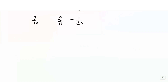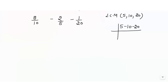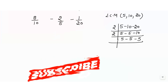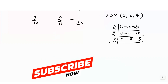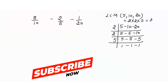Now suppose we have another subtraction question. We need to find the LCM of 5, 10, and 20, using prime factorization again. We divide: 2, 5, 5, and 10. Dividing again with 2: we get 5. Dividing with 5: we get 1. So the LCM is 2 × 2 × 5, which equals 20.